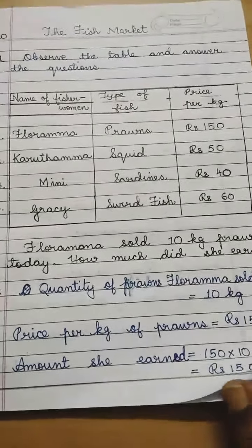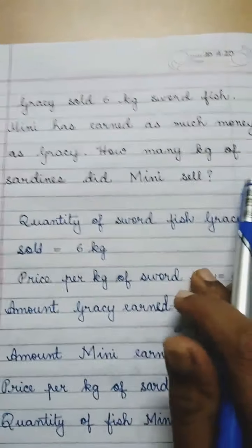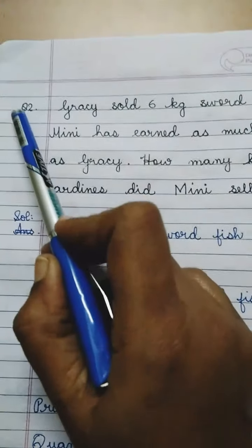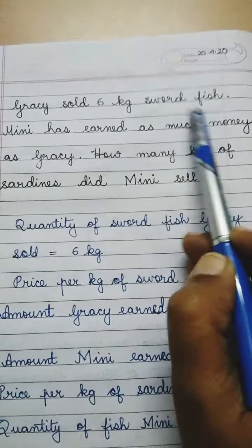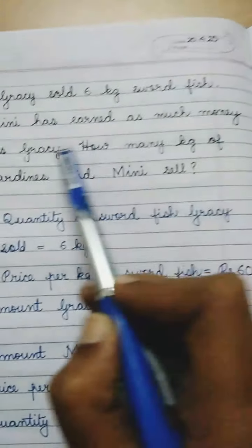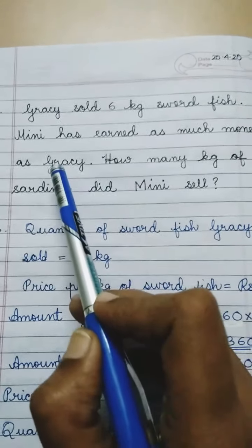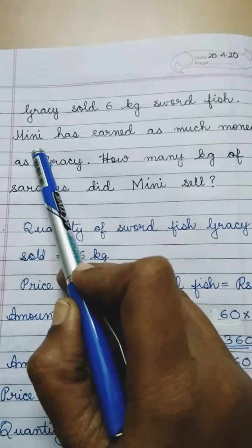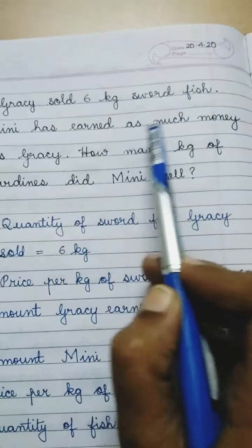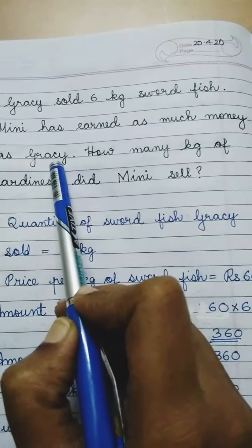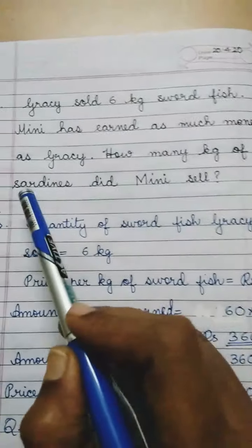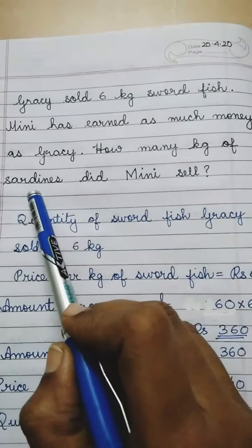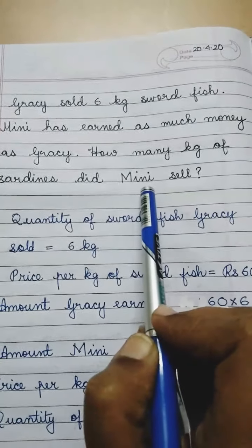Now come to the second question, children. This second question is not a direct question — it is a longer question, so read it carefully and understand it. Question number two: Gracie sold 6 kg of swordfish. Mini has earned as much money as Gracie — that means both friends earned the same. How many kg of sardines did Mini sell? That is what the question is asking.